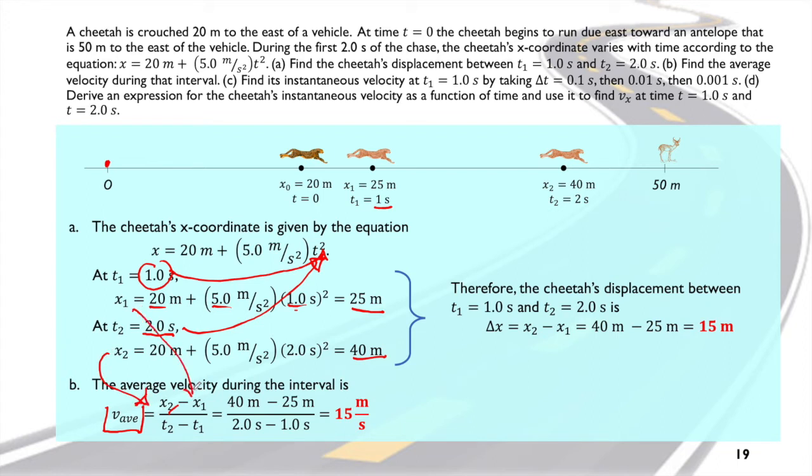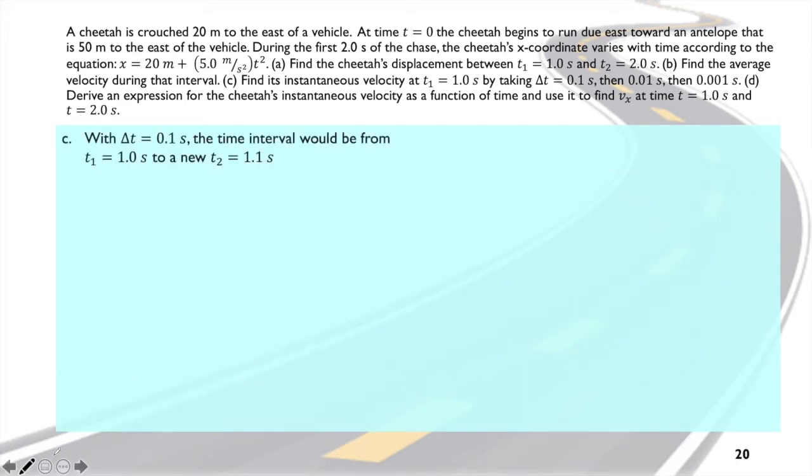x₂ minus x₁ divided by the two seconds for the x₂ and the one second for the x₁, and you will have the average velocity of 15 meters per second. So we have here the question number three, question number three.